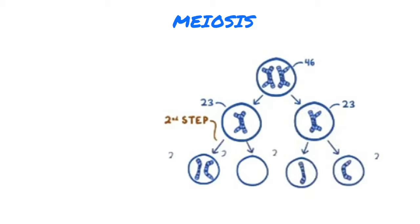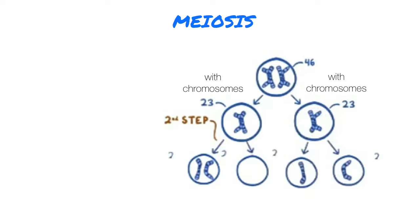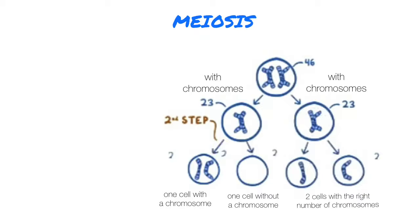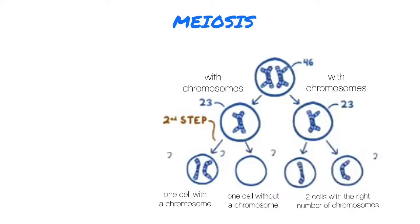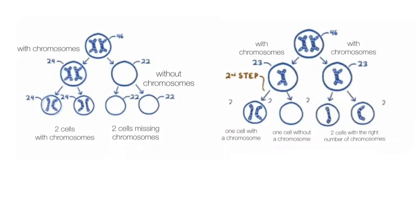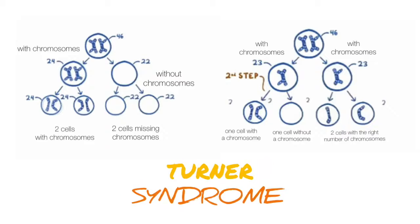Non-disjunction can also happen in the second step. The first step goes correctly — both cells have chromosomes. But if they don't split in the second step, then the final result is one cell with an extra chromosome, one missing a chromosome, and two with the right number. If an egg cell combines with any of these sperm cells that have the missing chromosome, then you get Turner's Syndrome.